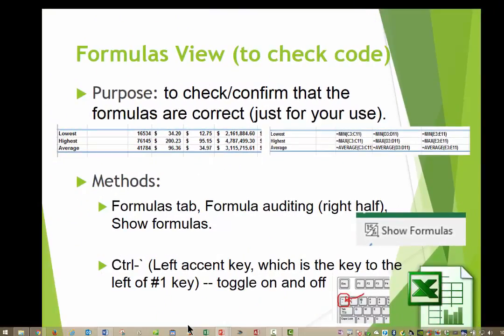Two methods for getting to the formulas view. One is a memorize item, but it might be easier for you to do it without memorizing if you don't do Excel all the time. That's up on the Formulas tab. On the right half of it, it says Formula Auditing Group, and then there's a button for Show Formulas.